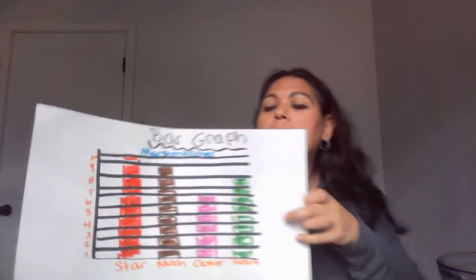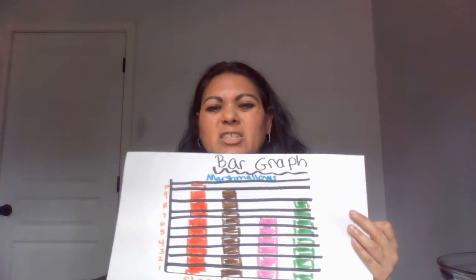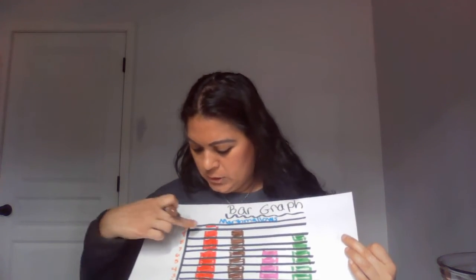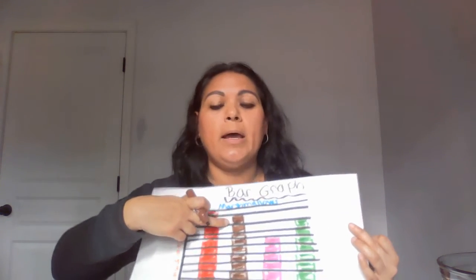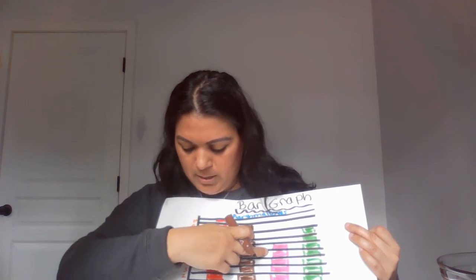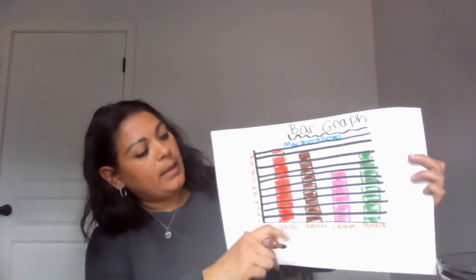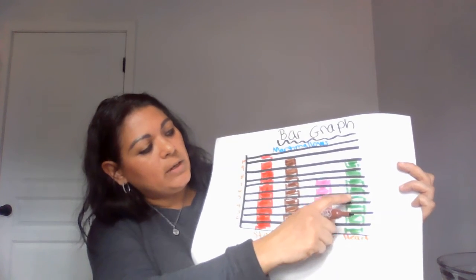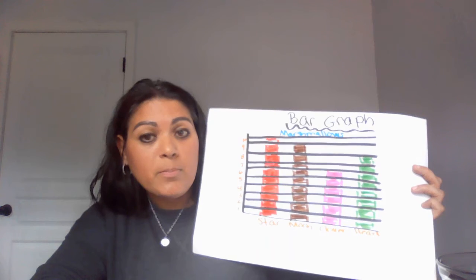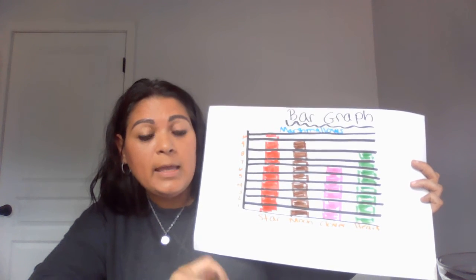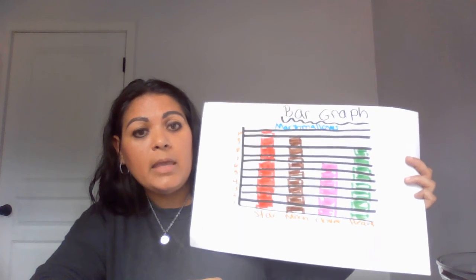Let's count quickly — how many all together? Let's start with our largest number. There were 10 stars. Ten plus nine is 19. This is where our adding comes in. Nineteen plus six clovers is 25. Then let's count by ones: 25, 26, 27, 28, 29, 30, 31, 32, 33. So there were 33 marshmallows all together in our graph.